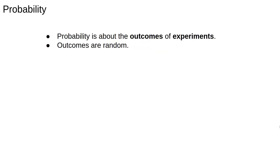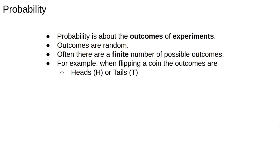So probability for us is therefore about the outcomes of experiments. We assume that outcomes are random, as in they can't be predicted exactly using Newton's laws or something like that. Often, there are only a finite number of possible outcomes, in which case probability theory is a lot simpler, and that's the case we'll mostly deal with.